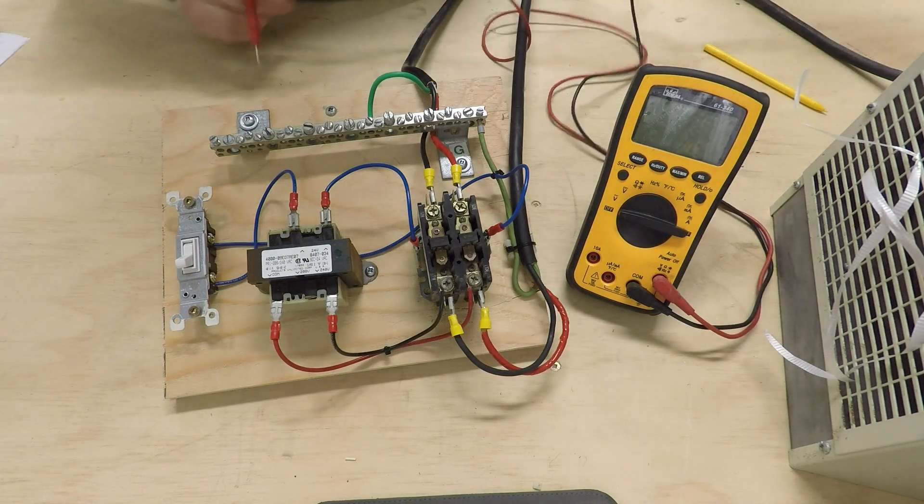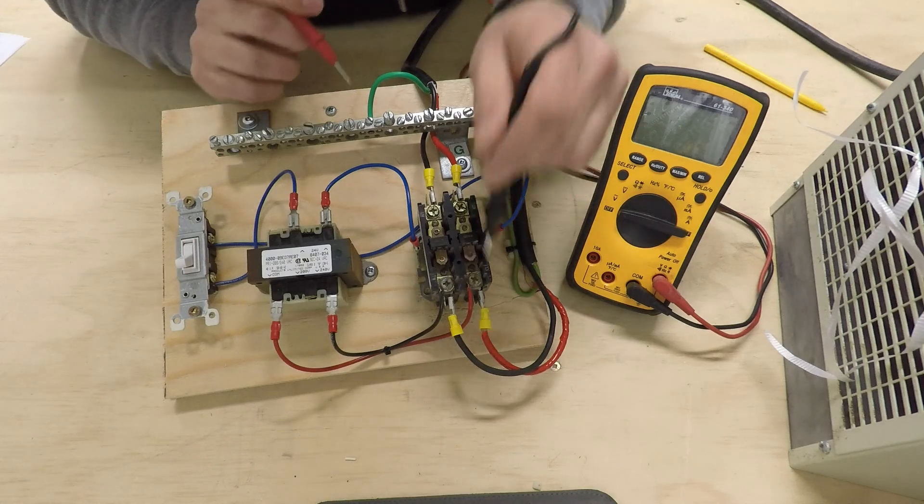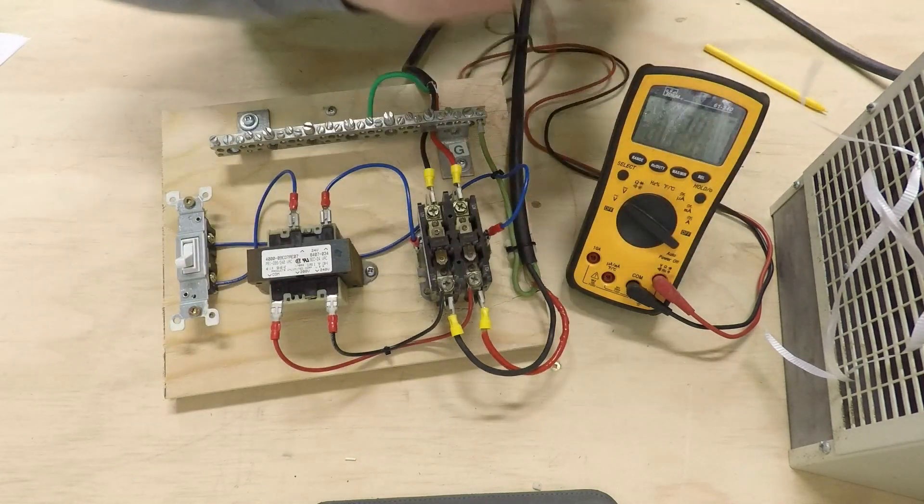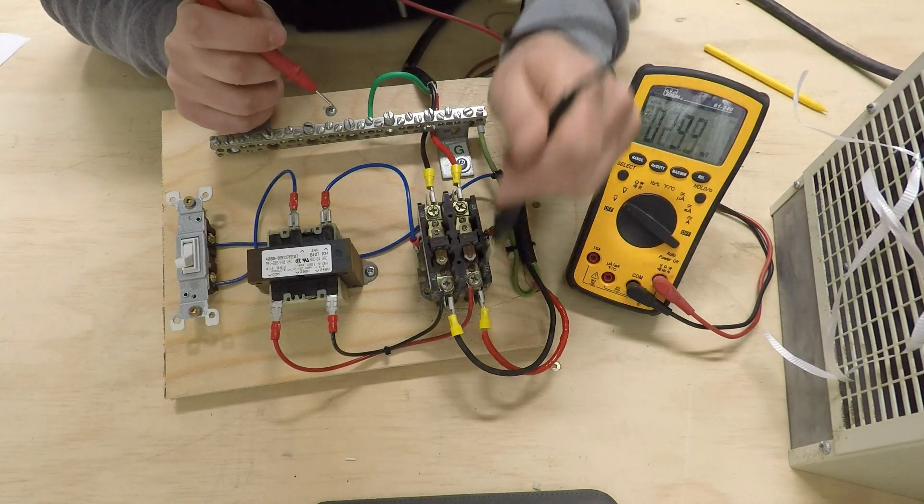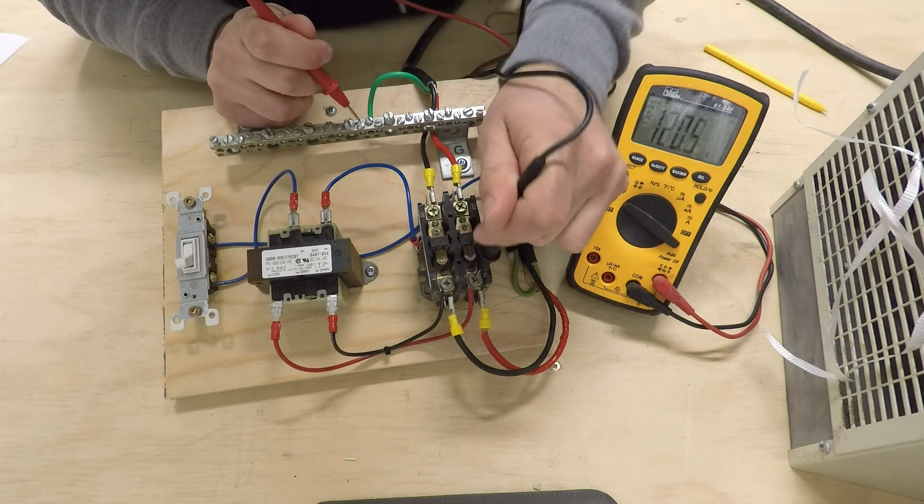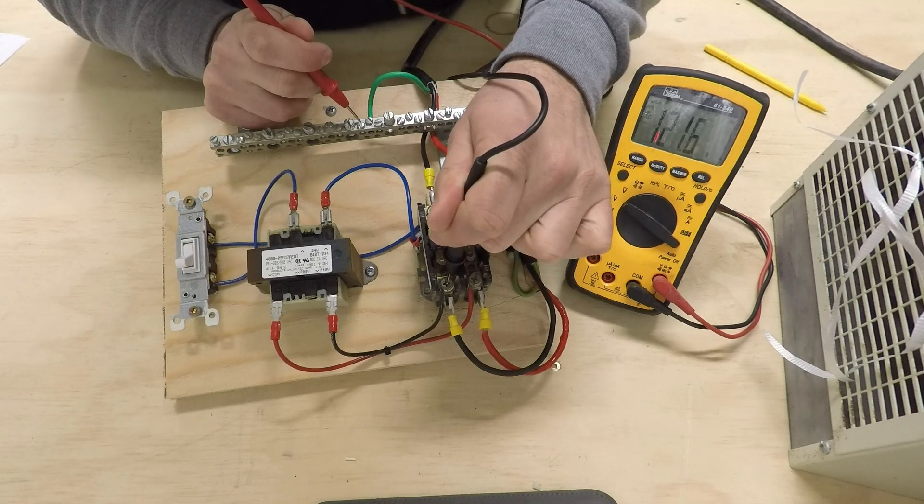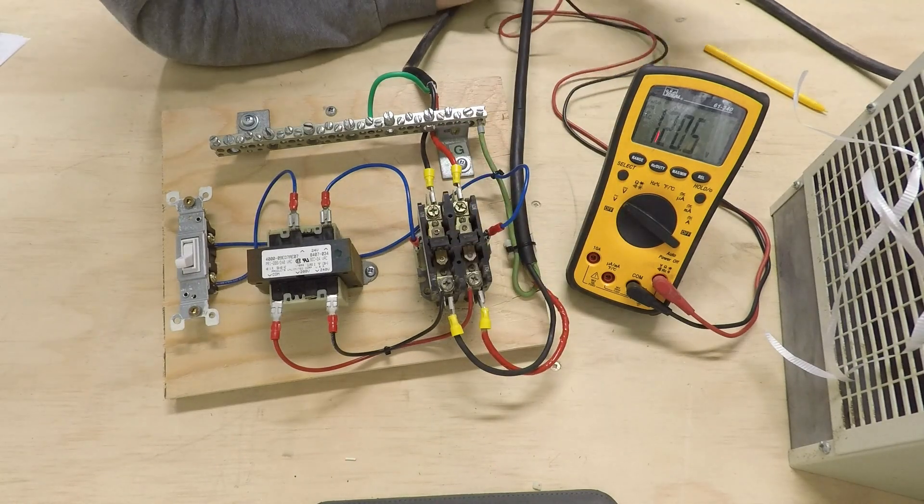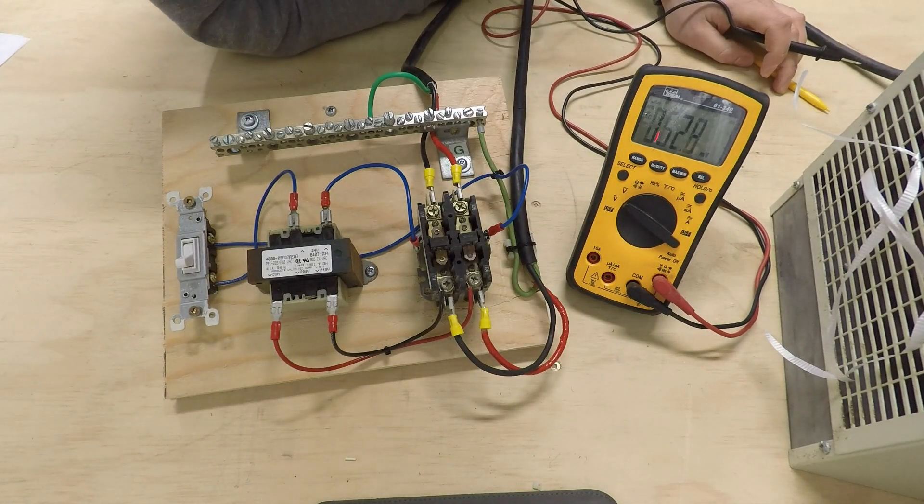Okay, the breaker's on right now, so we're going to have 120 volts on each phase coming into the line side of the contactor. So we'll just check that. Yeah, approximately 120 and approximately 120. So 120 plus 120 gives you your 240 volt supply.